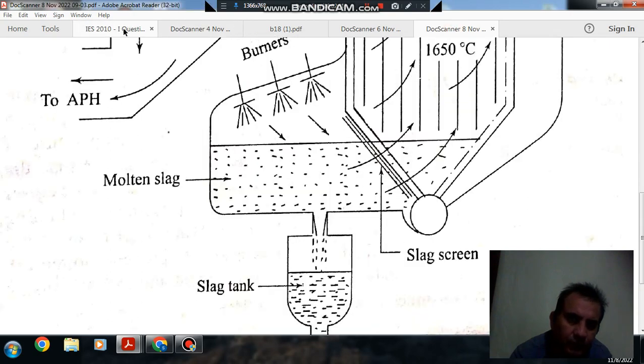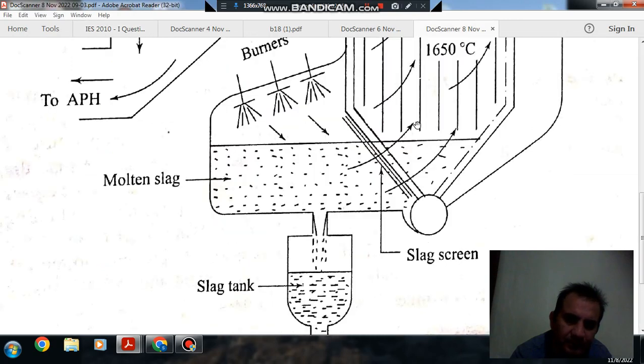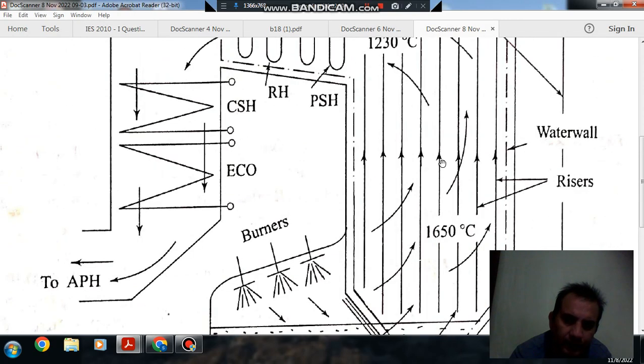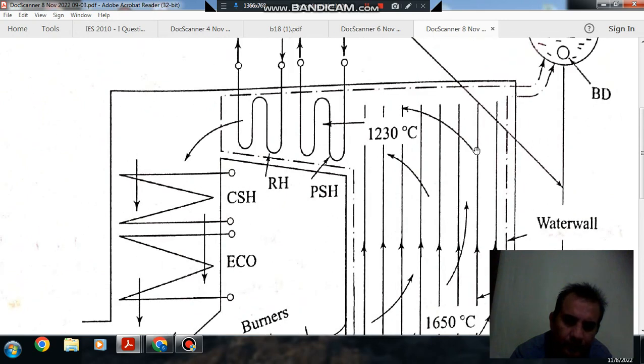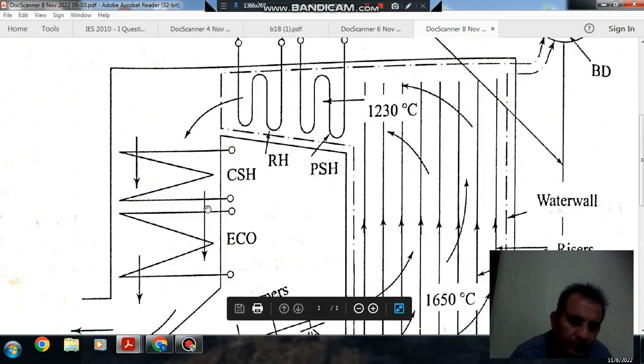The first part is to draw the schematic diagram. This is the schematic diagram. This is your riser. This is your downcomers. This is your superheater. This is the heater. This is the economizer.